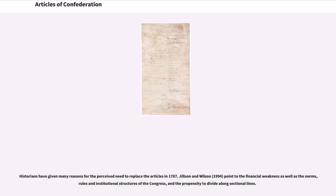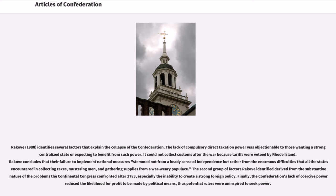Historians have given many reasons for the perceived need to replace the Articles in 1787. Gilson and Wilson (1994) point to the financial weakness as well as the norms, rules, and institutional structures of the Congress, and the propensity to divide along sectional lines. Rakoff (1988) identifies several factors that explain the collapse of the Confederation. The lack of compulsory direct taxation power was objectionable to those wanting a strong centralized state. It could not collect customs after the war because tariffs were vetoed by Rhode Island. Rakoff concludes that their failure to implement national measures stemmed not from a heady sense of independence but rather from the enormous difficulties that all the states encountered in collecting taxes, mustering men, and gathering supplies from a war-weary populace.